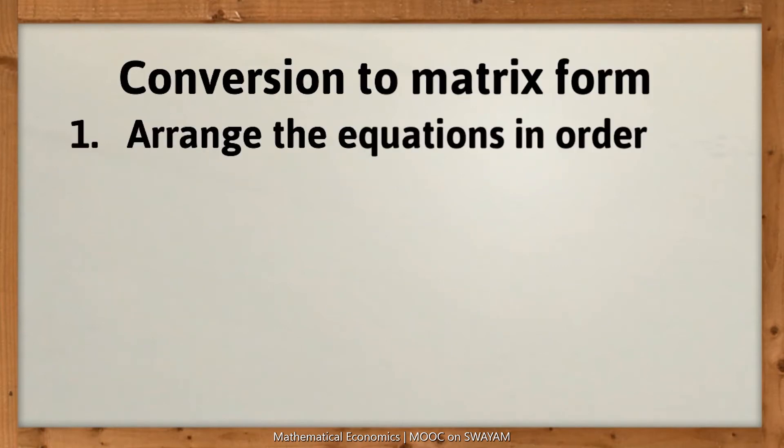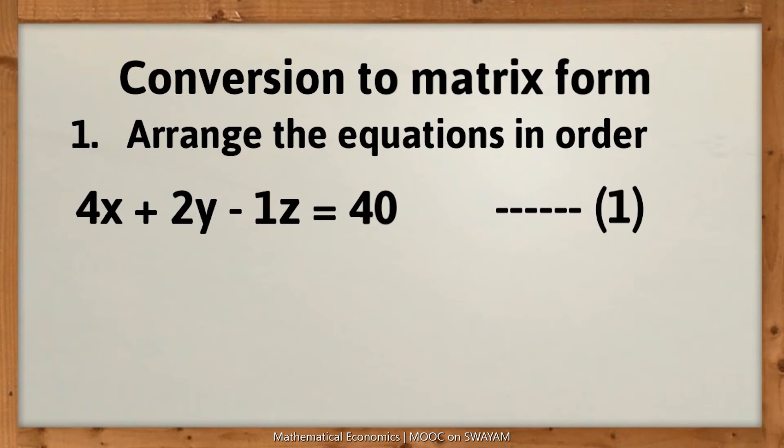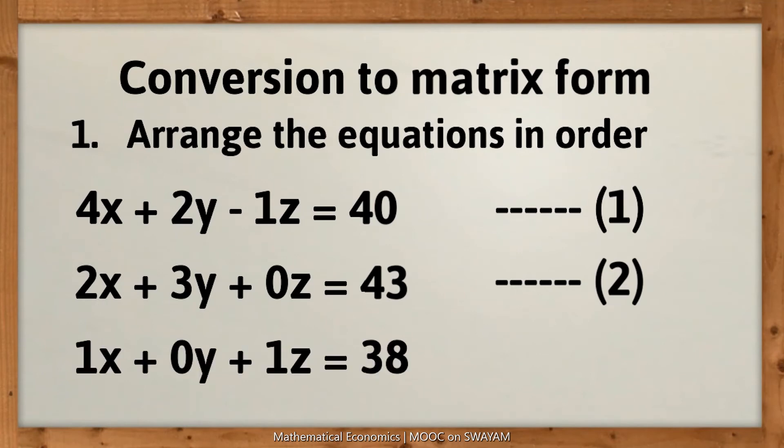To convert the system of three equations to matrix form, we first arrange the equations by placing the variables in the same order as follows. The missing variables are given a coefficient 0 and a variable without any coefficient is given a coefficient of 1.